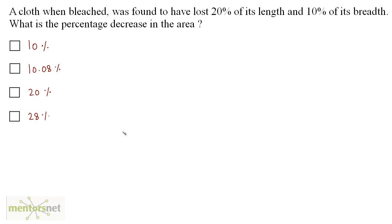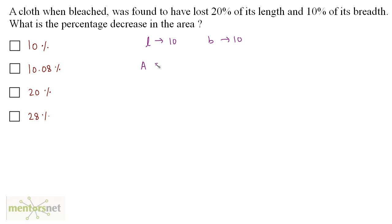A cloth, when bleached, was found to have lost 20 percent of its length and 10 percent of its breadth. What is the percentage decrease in the area? Since everything is in percentages, we can assume values. Let the length be 10 units and breadth be 10 units. The area equals 10 times 10, which is 100 — so the area is 100 percent.